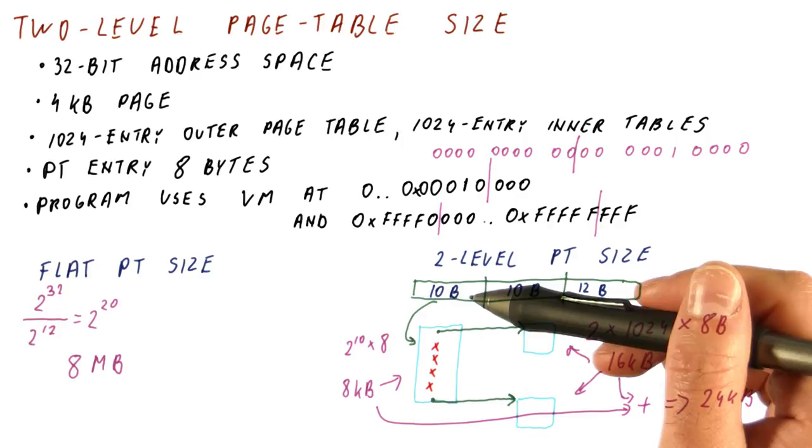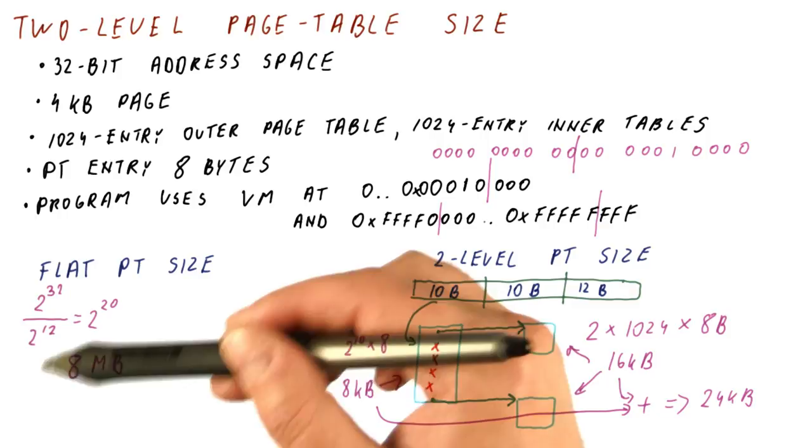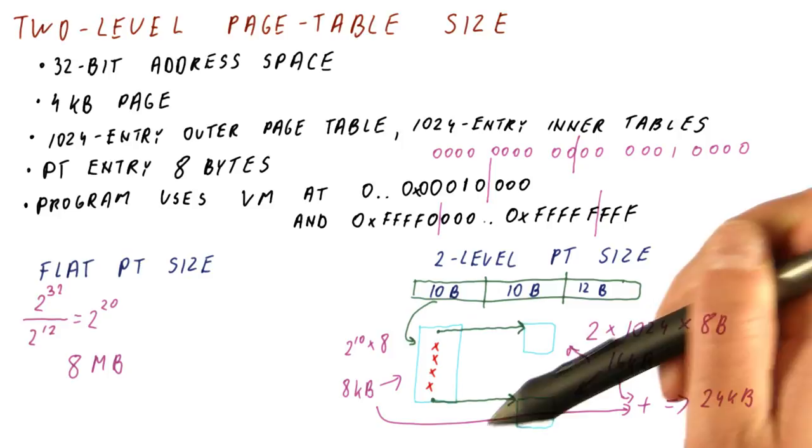Because for a 64 address space, the flat page table size will be too large to fit in memory. But a multi-level table will fit mostly because the outermost page table will have many empty entries. So we will need very few of these inner page tables.